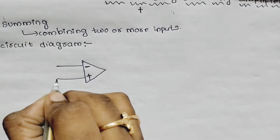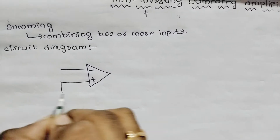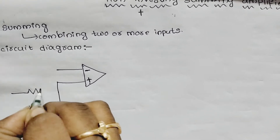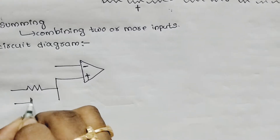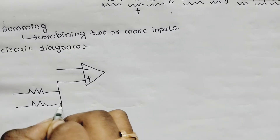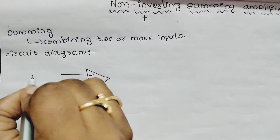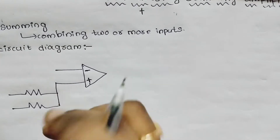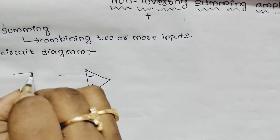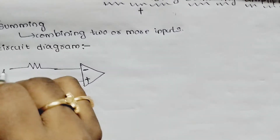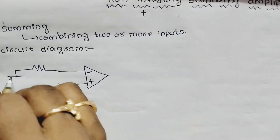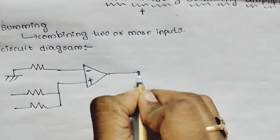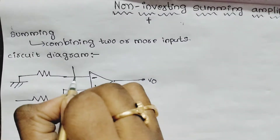So now I will name two resistances — two or more; I will use two resistances. And here I will connect the inverting pin. As usual, I will ground the inverting pin. And here will be the output, that is V0.